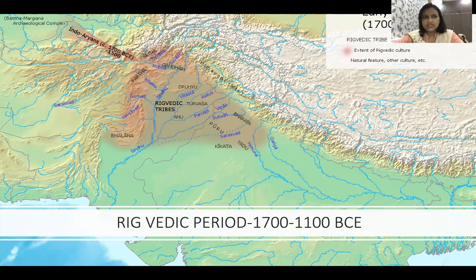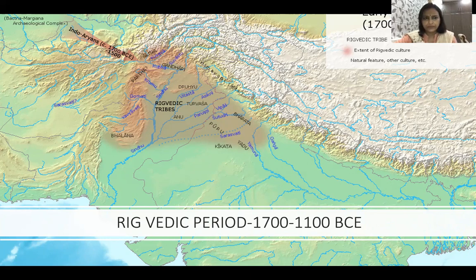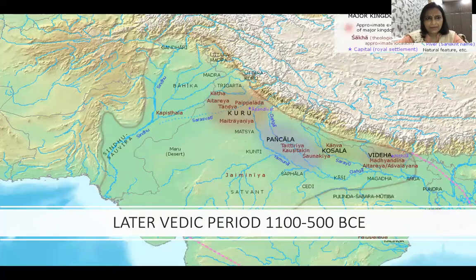The Rig Vedic period is from 1500 to 1100 BC — actually 1700 to 1500 BC. These tribes are constantly on the move. The actual question on Rig Vedic and later Vedic does not come in the exam, but to understand the rise of the Mahajanapadas it is very important to understand this interim period — what happened after the decline of the Harappan civilization. Take note of this map. The second map is of the later Vedic period, 1100 to 500 BCE.